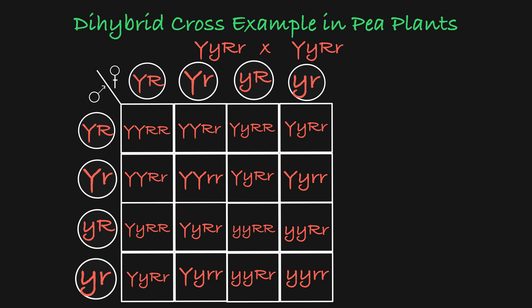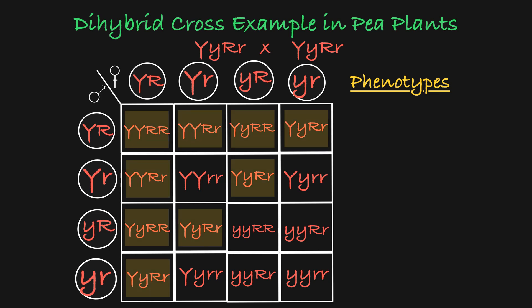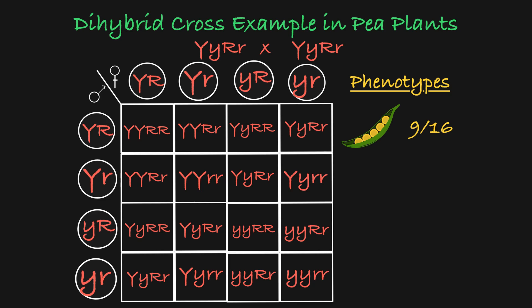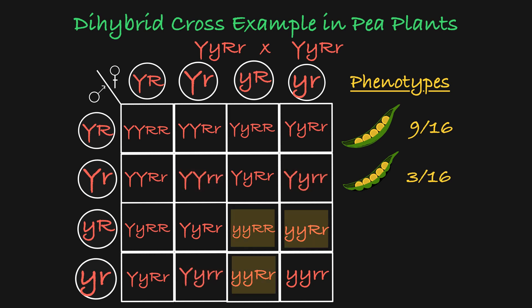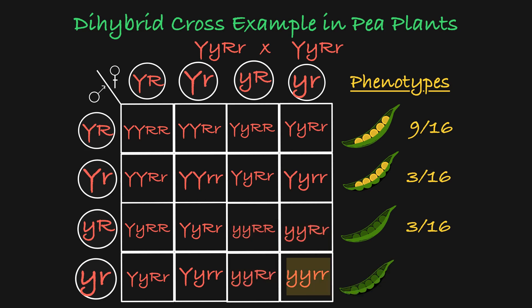Let's focus on the breakdown of phenotypes in the offspring. All of these squares represent offspring that will have yellow peas in a round pod. This phenotype occurs in 9 out of the 16 boxes, therefore in 9 sixteenths of the offspring. The yellow peas pinched pod phenotype occurs in 3 sixteenths of the offspring. The green peas in a round pod phenotype occurs in 3 sixteenths of the offspring. And the green peas in a pinched pod phenotype occurs in just one box, making up 1 sixteenth of the offspring.